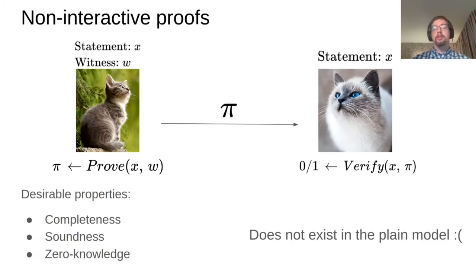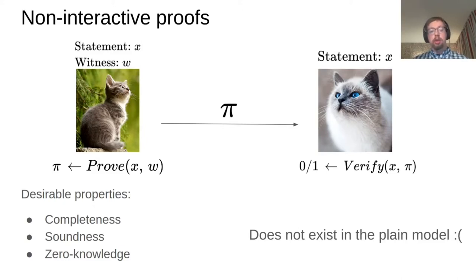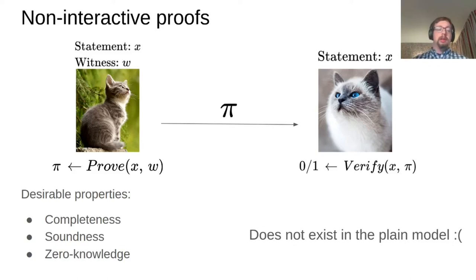I'll start by giving some intuition about the setting we're in and the problems we're trying to solve. Non-interactive proofs is a nice primitive to have in cryptography. We're in a setting where the prover cat, who knows the statement X as well as some private witness W which certifies that X is the true statement, wants to convince the verifier white cat about the truth of this statement without revealing its witness. We want this system to have some desirable properties, namely completeness, soundness, and zero knowledge.